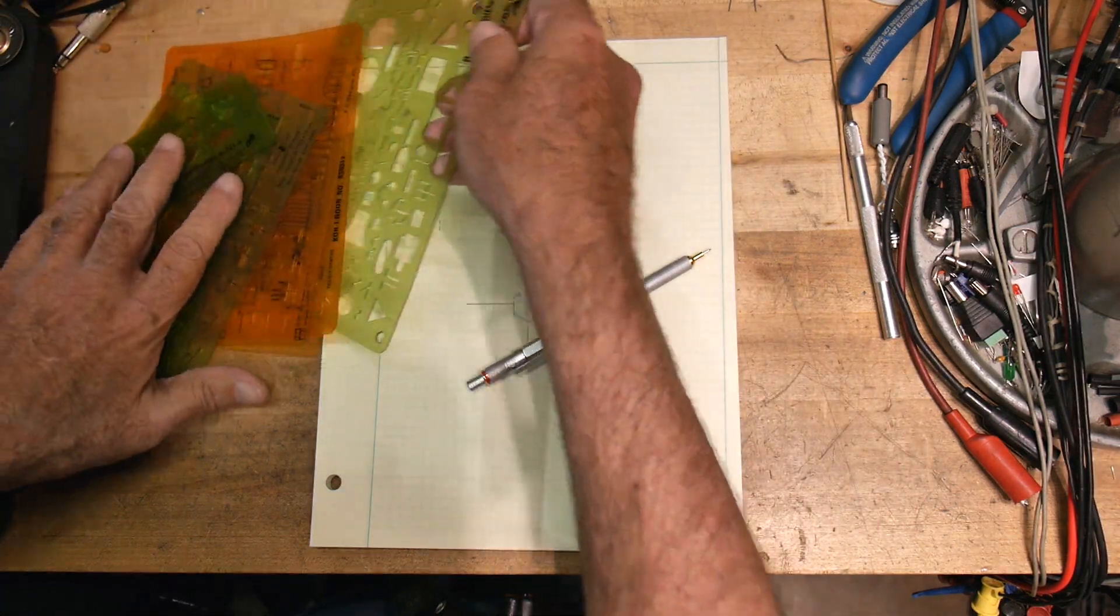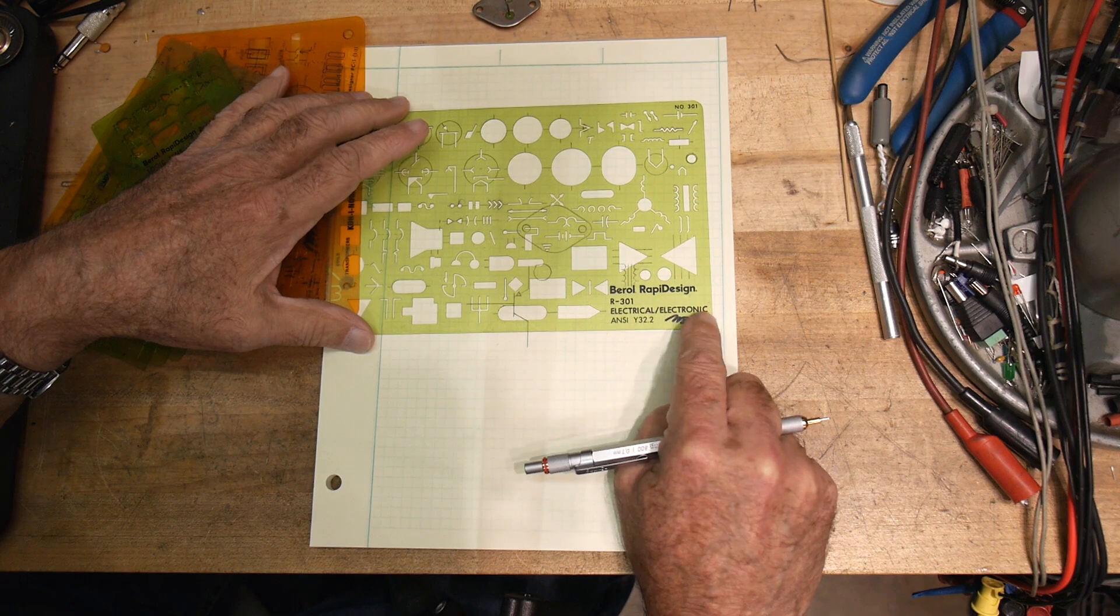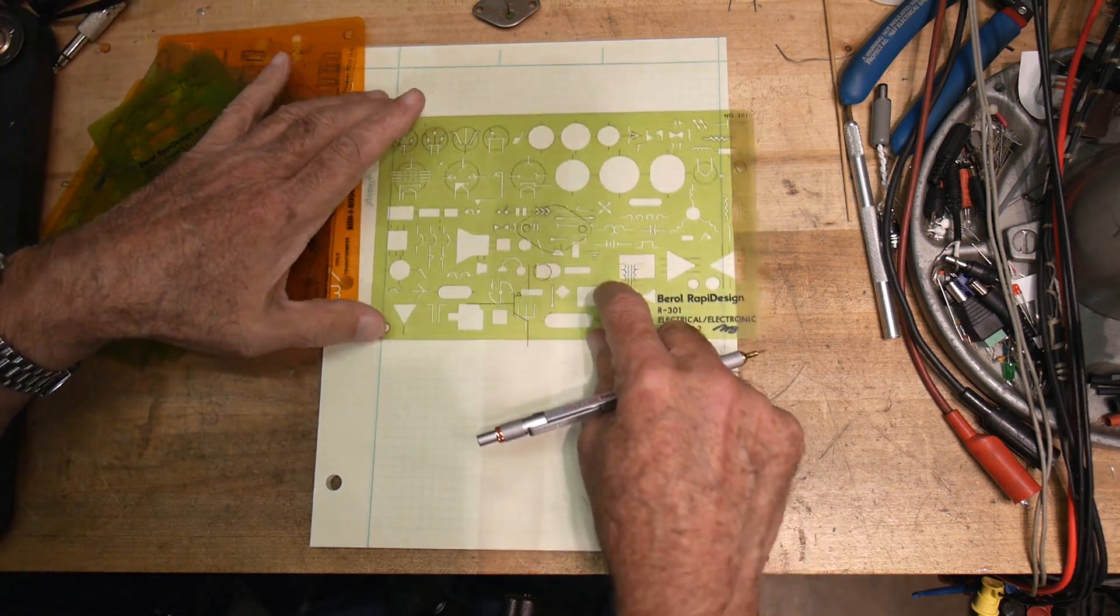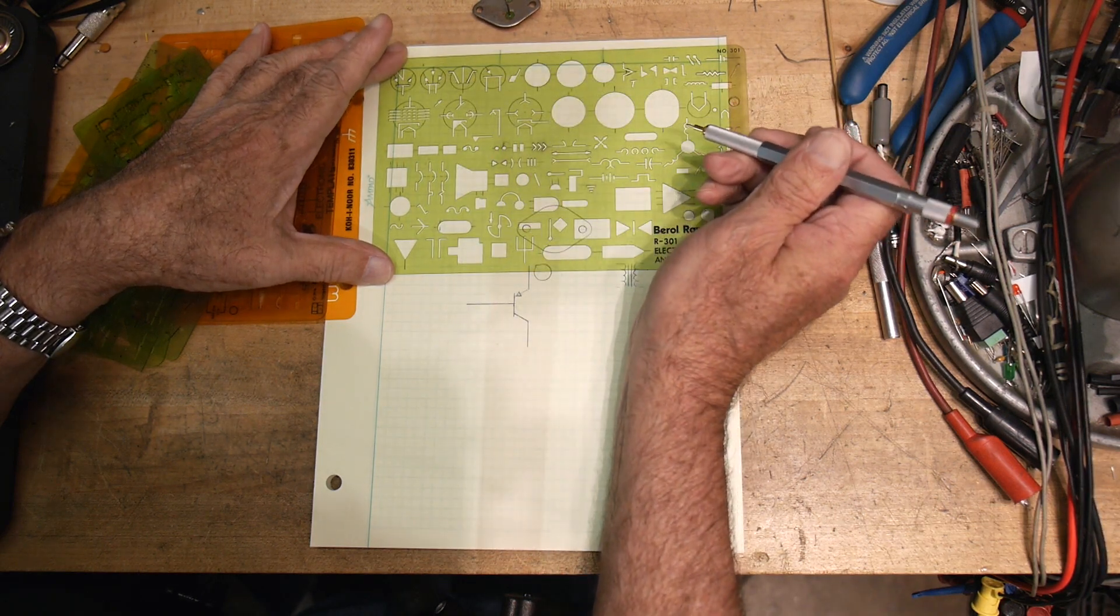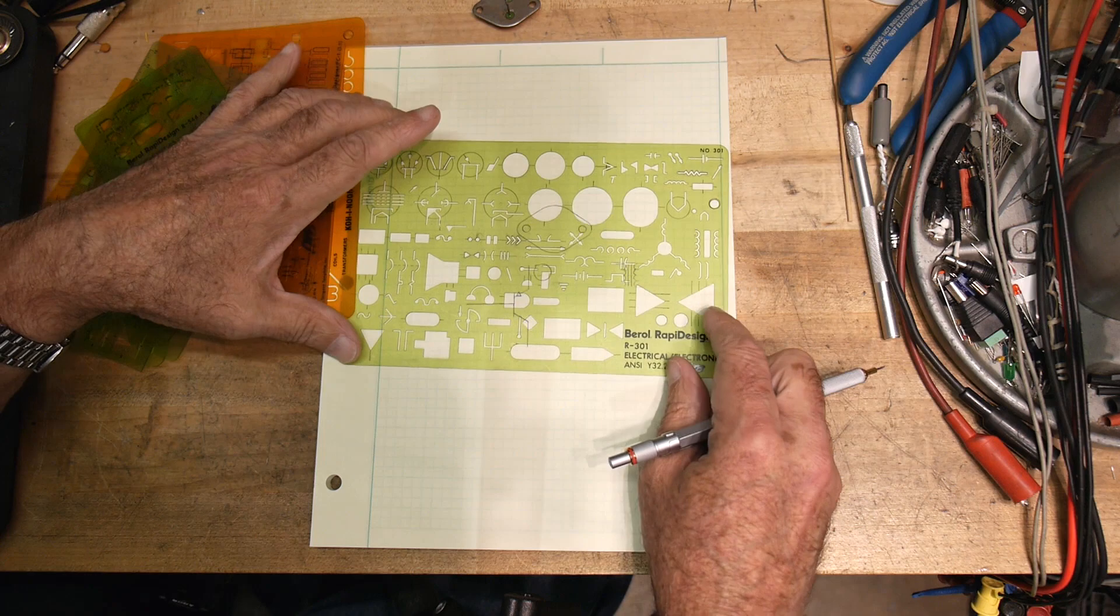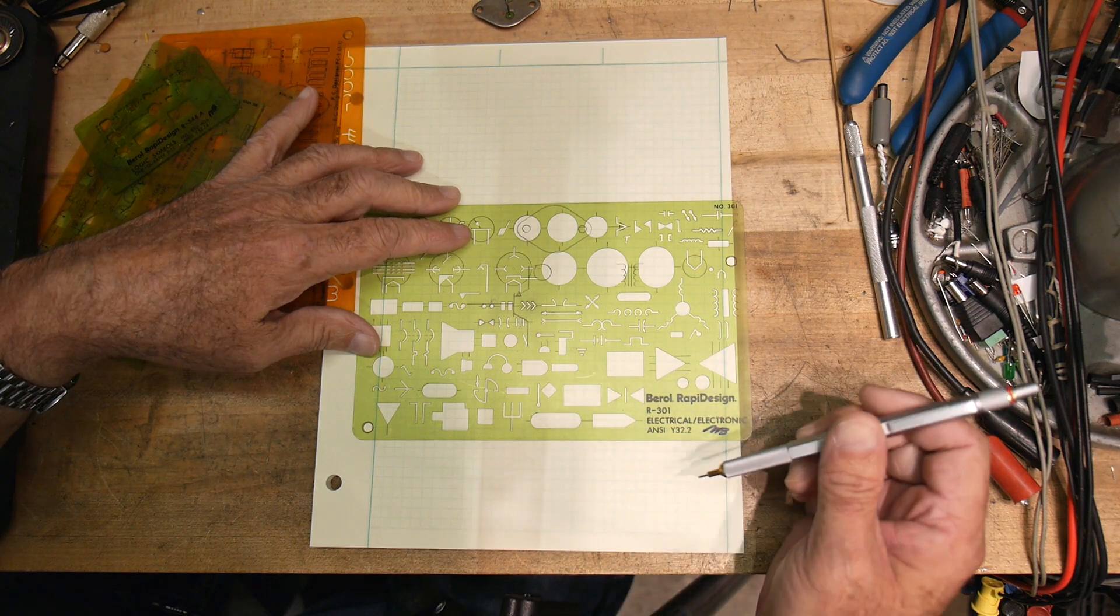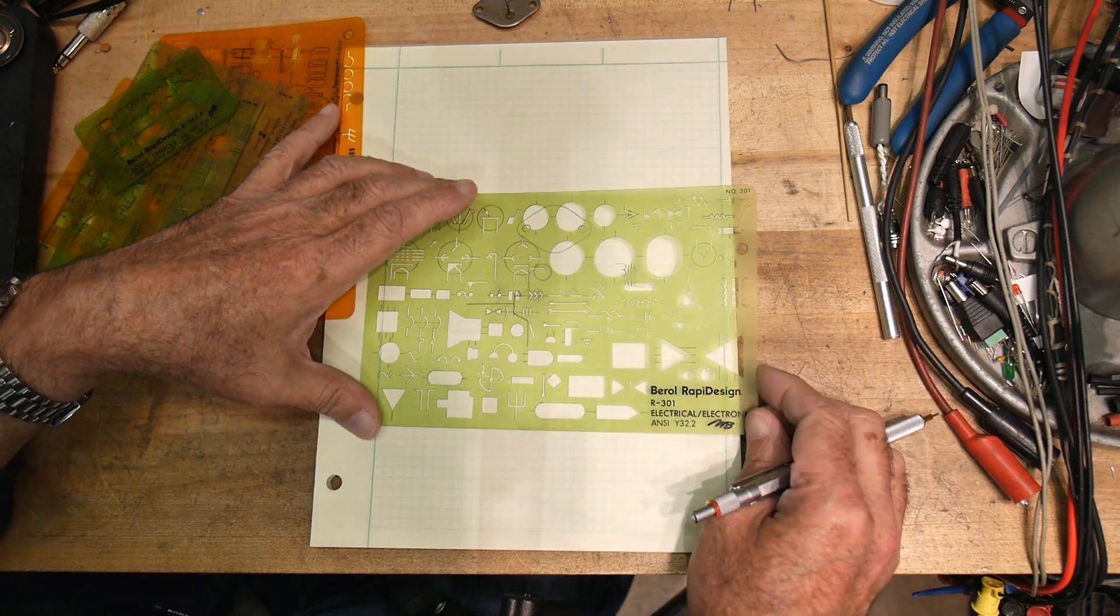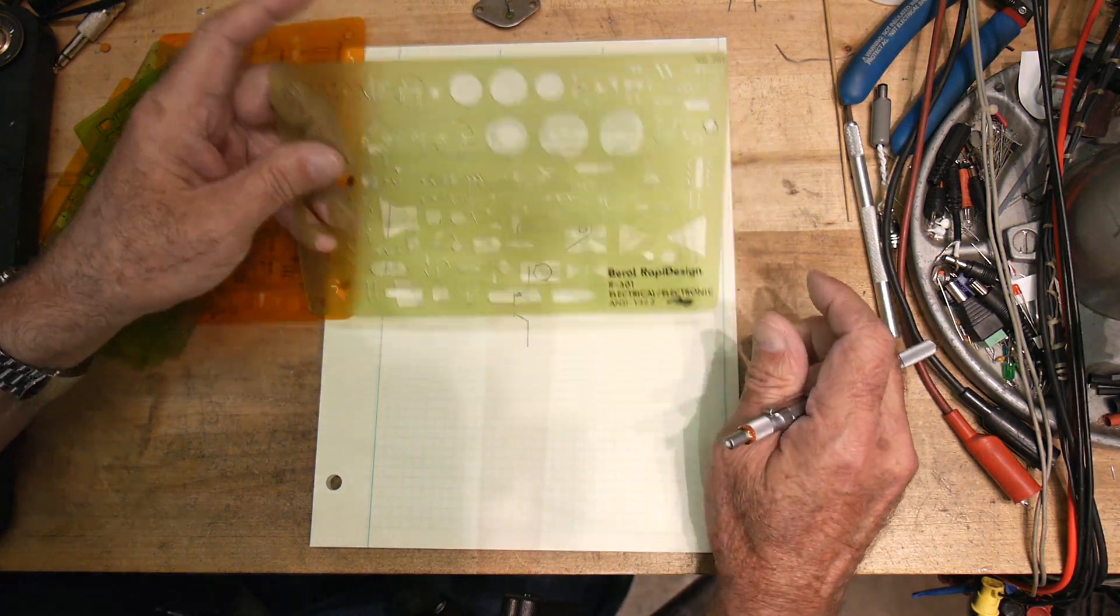All right, let's look at another big one here. This one's by Barrel Rapid Design. Electrical/electronic engineering, ANSI standard Y32.2. And this one's got tubes and transistors. It's got some little double arrows for like a photodiode or an LED. That's kind of cool. There's some strange symbols here I don't quite recognize. Here's what looks like an antenna. Here's a cool fuse. I like that fuse. Yeah, that's a nice one. I can see remains of pencil lead in there, so I've used that one.